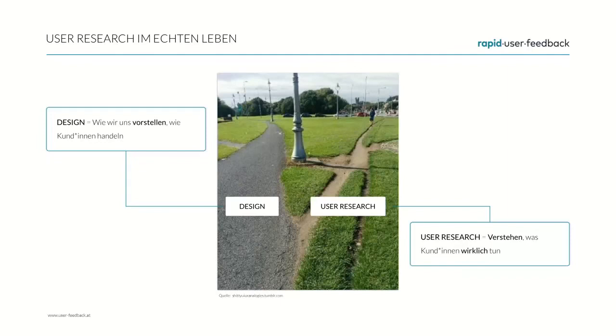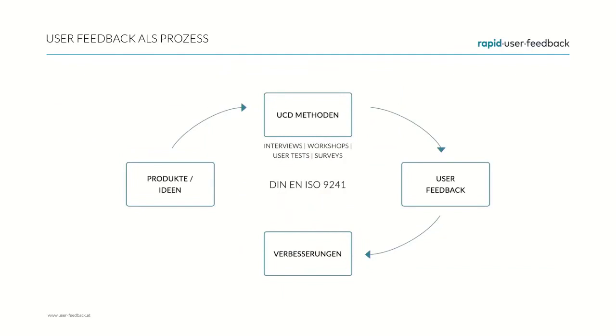On the left you see the track which was designed to be used, and on the right the track which is actually used. A good method is research-centered design, which is an ISO-certified process. It can be broken down into four steps: you start with either an idea for a product or look at an existing product you want to enhance.